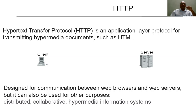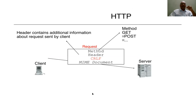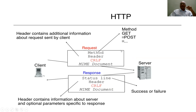Let us start with a simple example where a client issues a request. The request usually contains some basic information such as the method being requested from the client, and the header which contains client information such as the username, password, and other details pertaining to the user, followed by a carriage return and line feed with some MIME information that is sent from the client to the server.